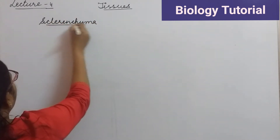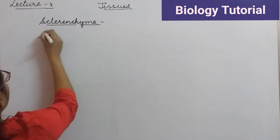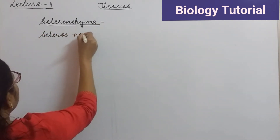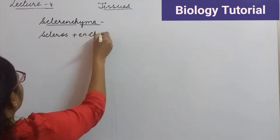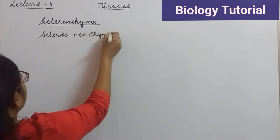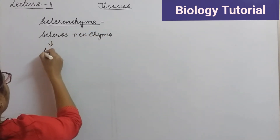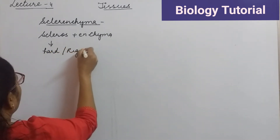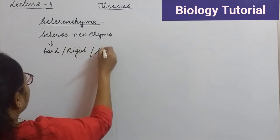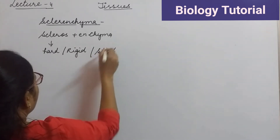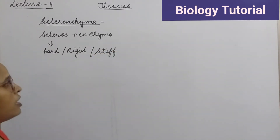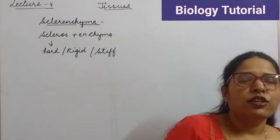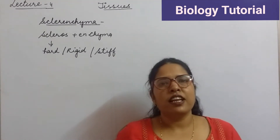The word sclerenchyma is made up of two words: sclerose plus enchyma. Sclerose means hard, rigid, or stiff. Enchyma means infilling. So this is the meaning of the word sclerenchyma.